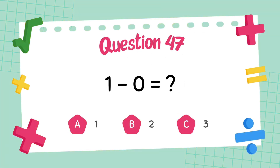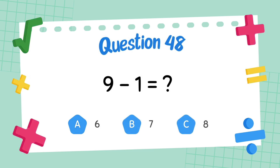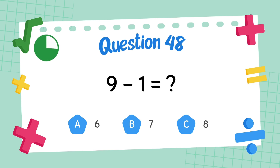What is 5 minus 4? The answer is 1. What is 5 minus 5? The answer is 0.